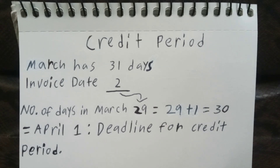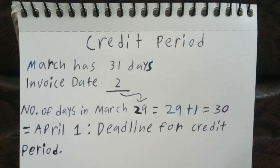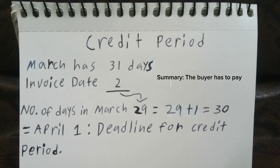So the question is: what's the month after March? That's correct — it's April. We need 1 day from April to complete our 30-day credit period, because 29 plus 1 equals 30. So April 1 will be the deadline for our credit period, meaning the buyer has until April 1 to pay without any additional charges.